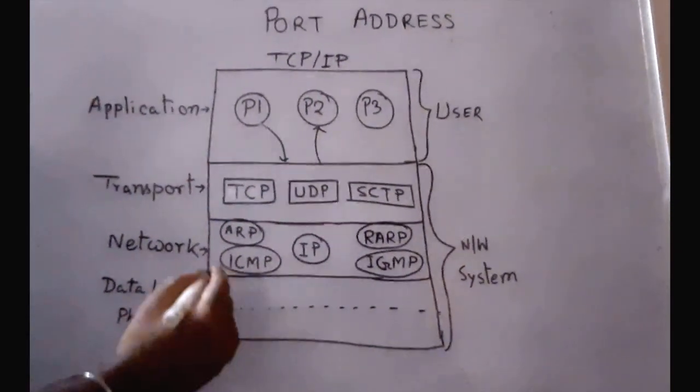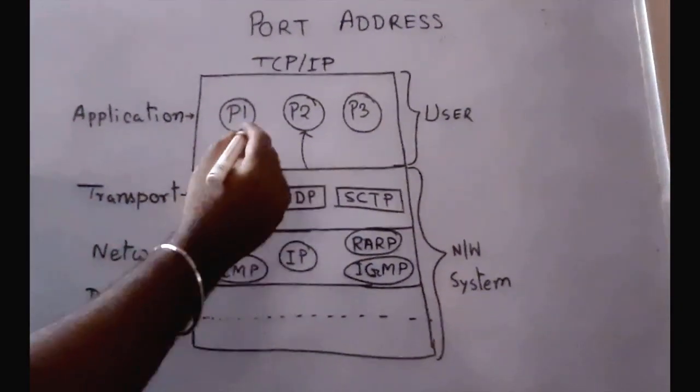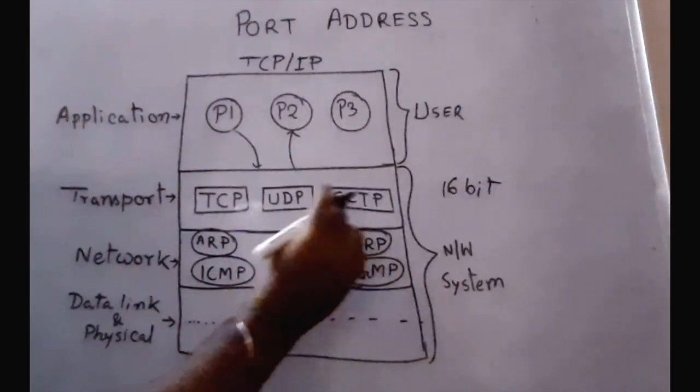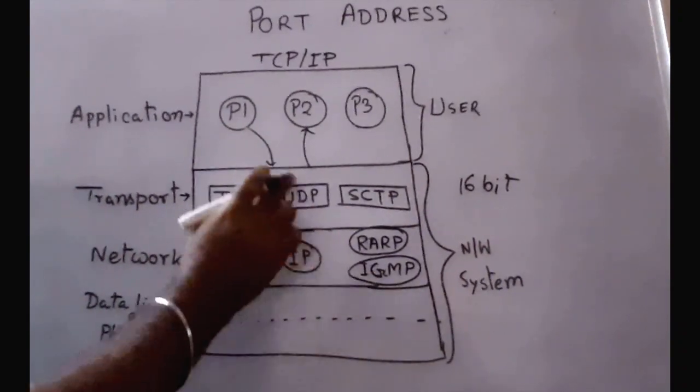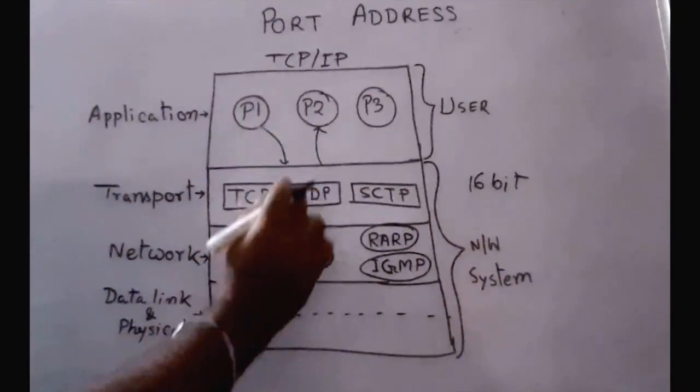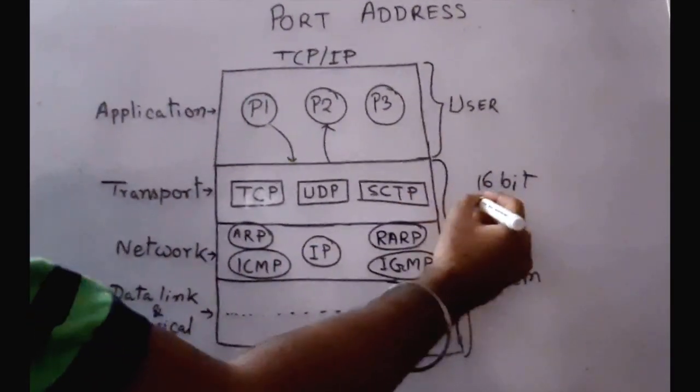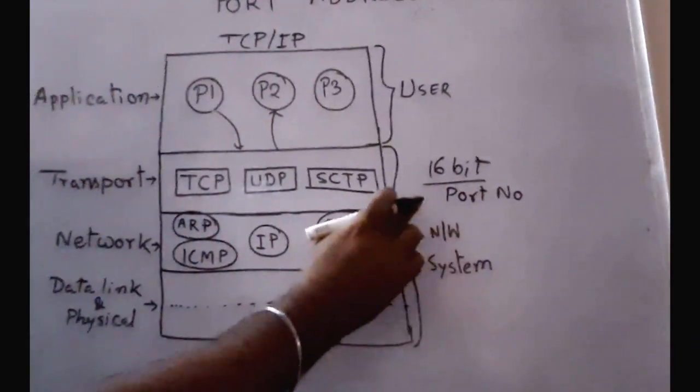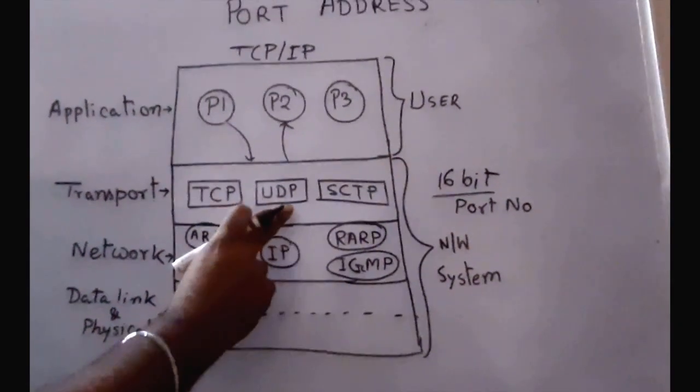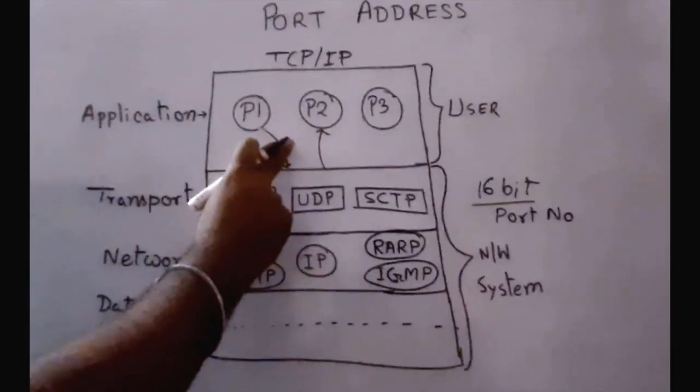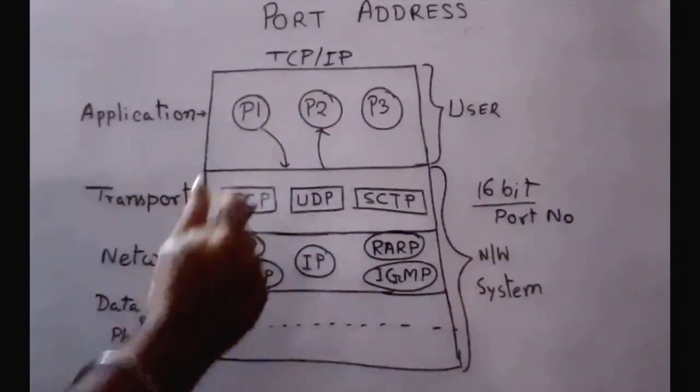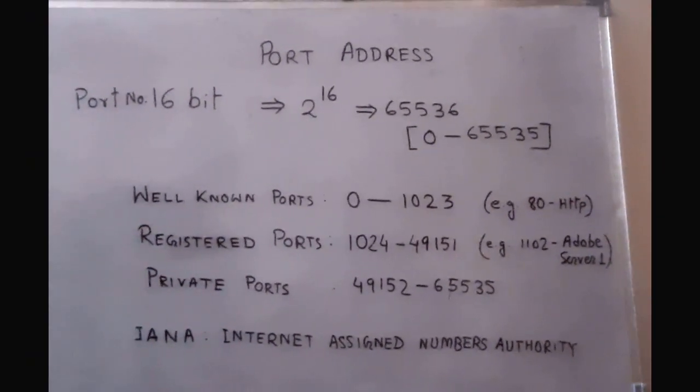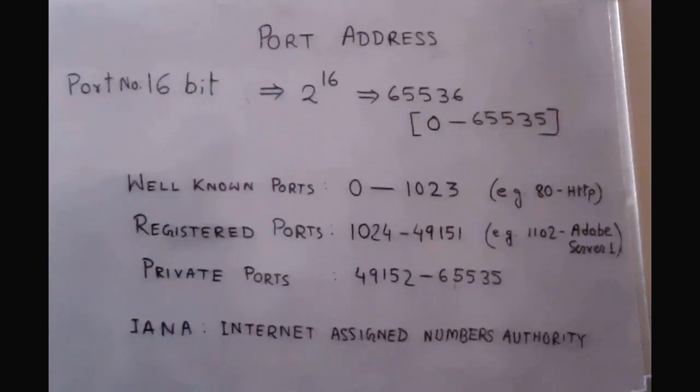Port number is the 16-bit number that is used by the transport layer to identify individual processes. This 16-bit number is called the port number. Port number or port address works in the transport layer to identify single user processes. In TCP/IP model, transport layer uses 16-bit number to identify user processes.